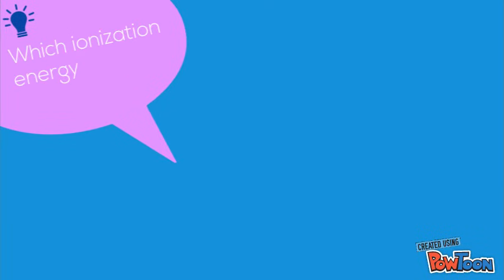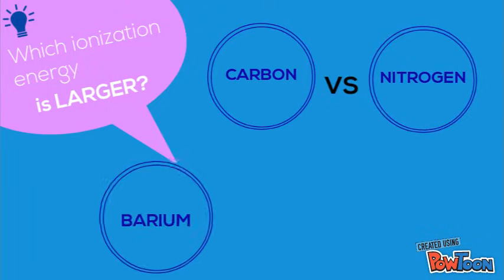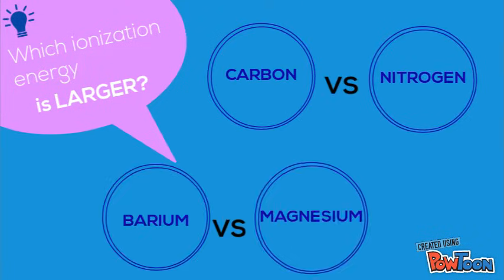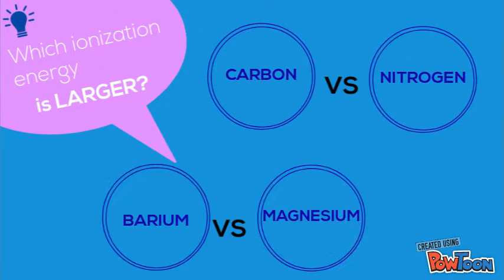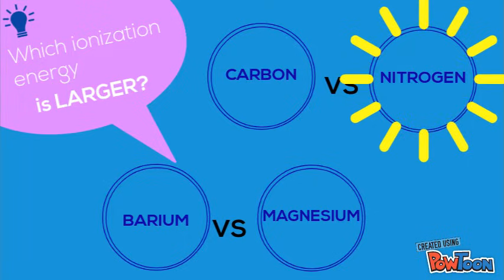Now knowing this trend, which first ionization energy will be larger? Carbon or nitrogen? Barium or magnesium? Pause the video until you have an answer. If you think the ionization energy of nitrogen is larger, you're correct. If you think the ionization energy of magnesium is larger, you're correct.